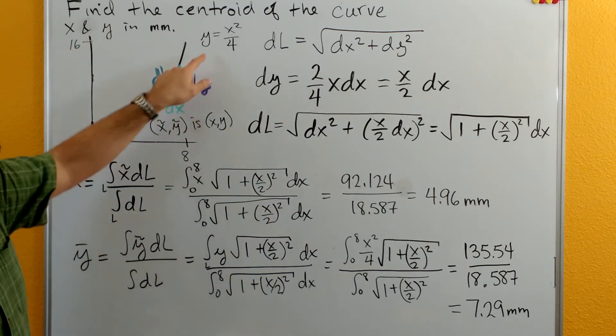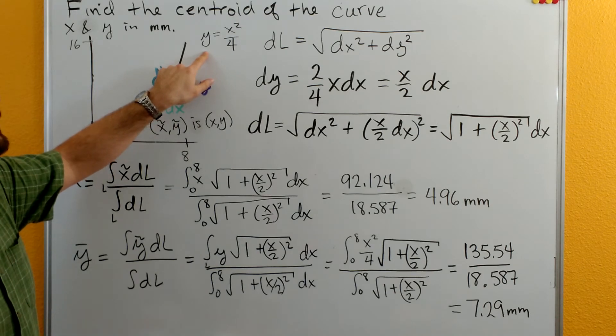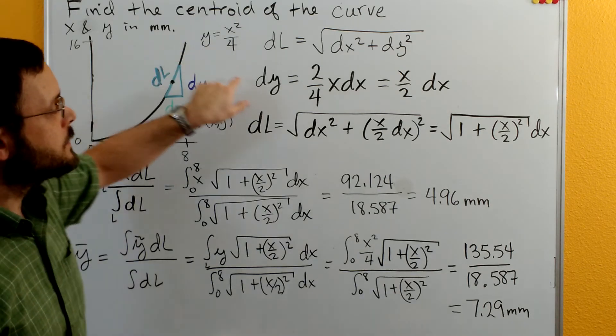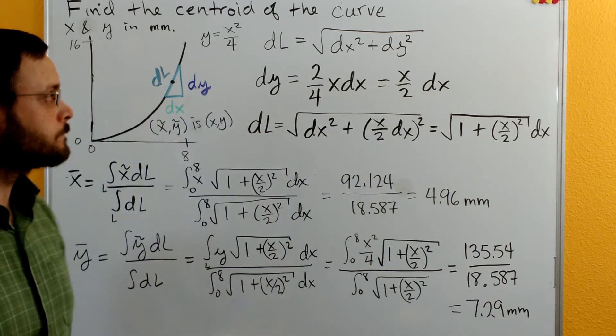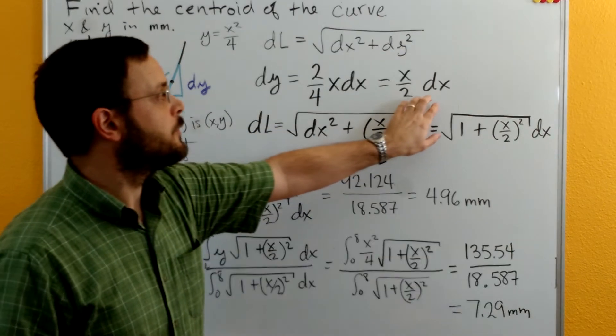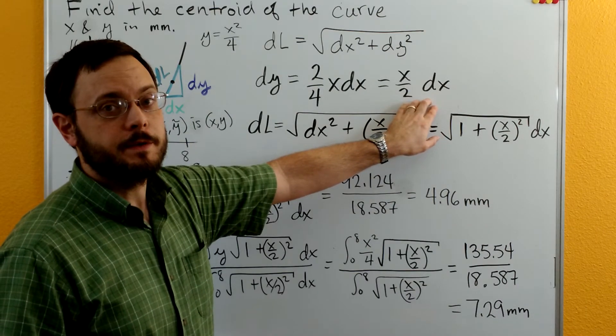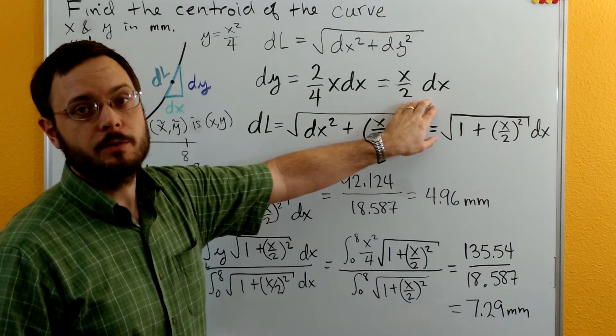You can also think about taking a derivative here and then clearing the fraction and multiplying through by dx to get the same equation. Cleaning up the fraction a little bit we get dy is equal to x divided by 2 times dx.